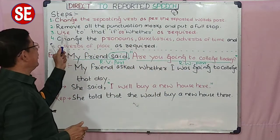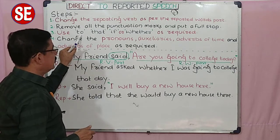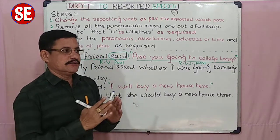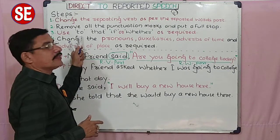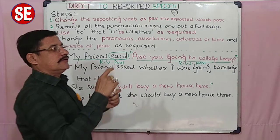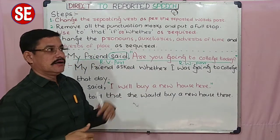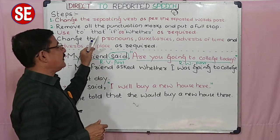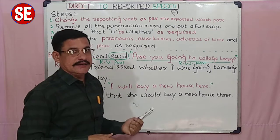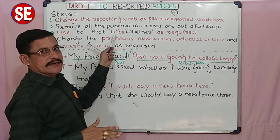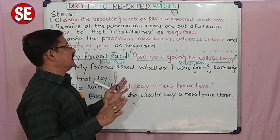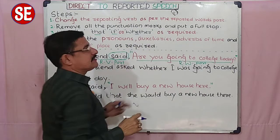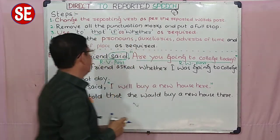Next, the third step: use 'to', 'that', 'if', or 'whether' as required. 'To' is used when the Hindi meaning gives a 'ko' sound — like 'aane ko kaha', 'karne ko'. In English we use 'to' for that. 'That' means 'ki' — 'usne bola ki'. 'If' means 'yadi'. 'Whether' has the same meaning — 'yadyapi' or 'yadi'. Out of these four words, one must be used as required.